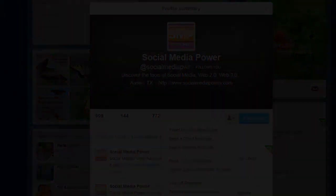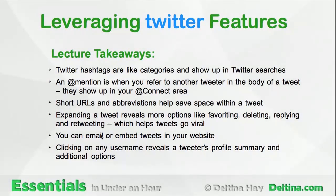To summarize this lecture: Twitter hashtags are like categories and show up in Twitter searches. An at mention is when you refer to another tweeter in the body of a tweet, and they show up in your at connect area. Short URLs and abbreviations help save space within our tweet. Expanding a tweet reveals more options like favoriting, deleting, replying, and retweeting, which helps tweets go viral. You can email or embed tweets into your website, and clicking on any username reveals a tweeter's profile summary and additional options.